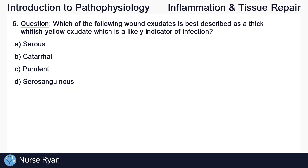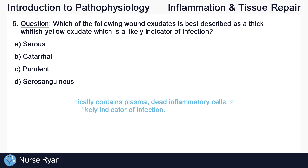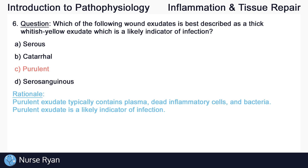Question number six: which of the following wound exudates is best described as a thick whitish yellow exudate, which is a likely indicator of infection? The answer here is C, purulent. Purulent exudate typically contains plasma, dead inflammatory cells, and bacteria. Purulent exudate is a likely indicator of infection.